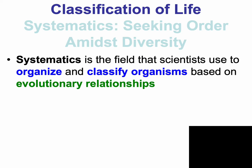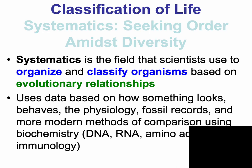Because science uses data to show evidence, systematics specifically also uses data. Let me talk about all the different kinds of data that are used. Phenotypes — how something looks, its behaviors, how it interacts with other organisms, how that organism tries to survive — all of these things are phenotypes.